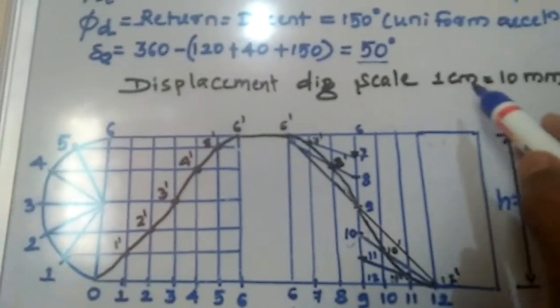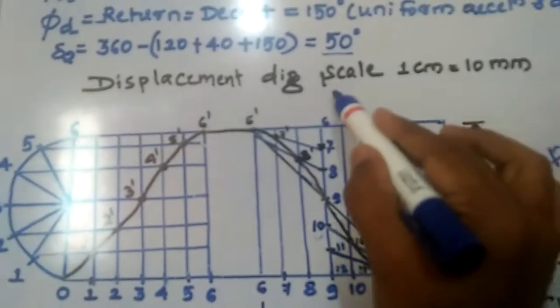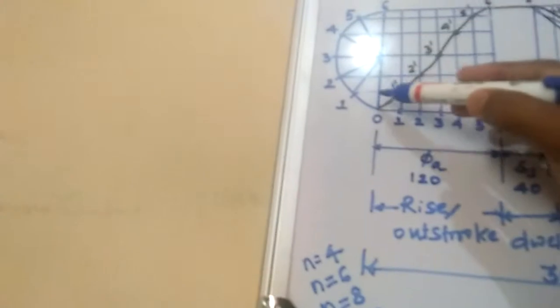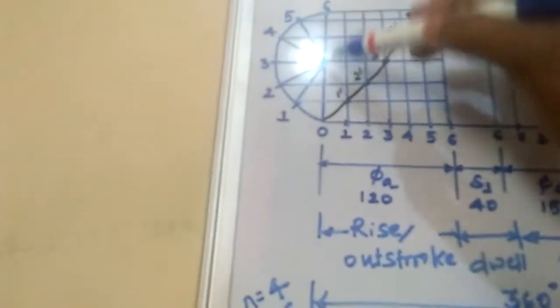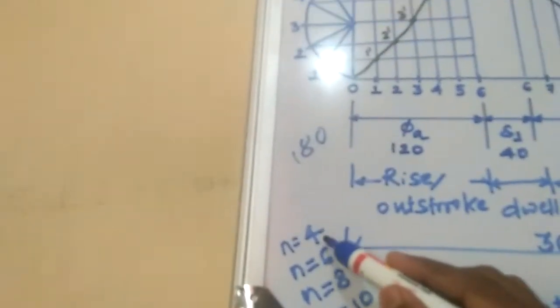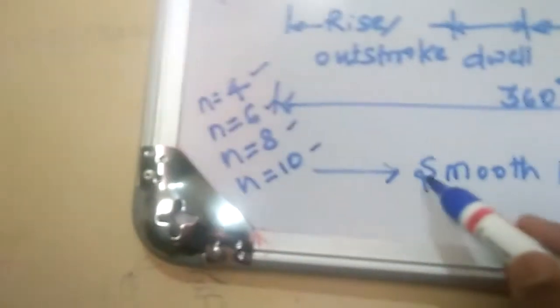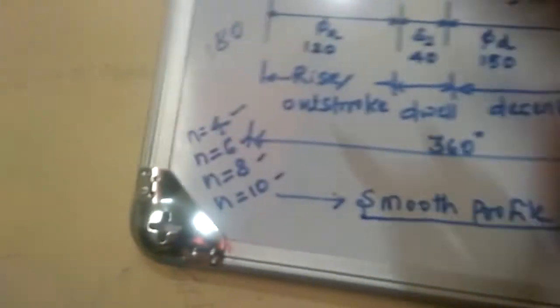I will come to how to draw two things: one is a displacement diagram, and one is a cam profile. For the displacement diagram, the scale for the vertical only is 1 centimeter equal to 10 mm. I will not spend much time on the SHM since I have explained it in previous examples. For the semicircle — which is 180 degrees — you can make n as a number of divisions: 4, 6, 8, or 10. If n increases, you get a smoother cam profile and accuracy also increases.